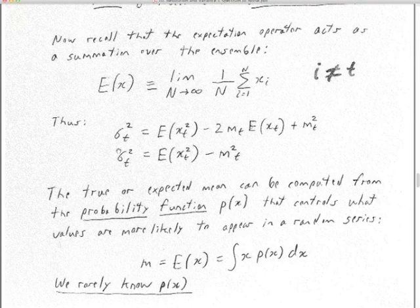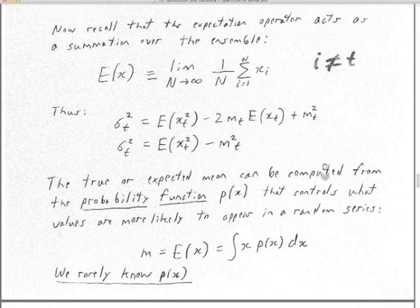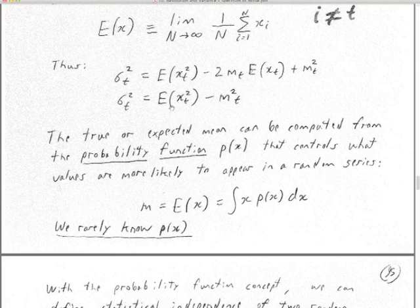So sigma squared equals the expectation of X(T) squared, minus two M(T) times the expectation of X(T), plus M(T) squared. That simplifies so that sigma squared at T equals the expectation of X squared at T minus M squared at T. That's theoretical — we're not yet concluding whether we can actually get the ensemble or not. Maybe in rare cases we can; in other cases we'll use a time average and assume we have ergodic, stationary series.